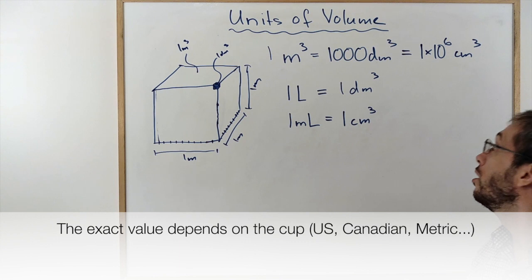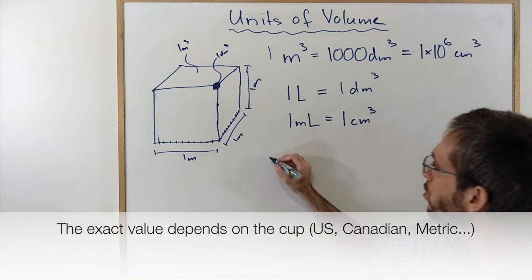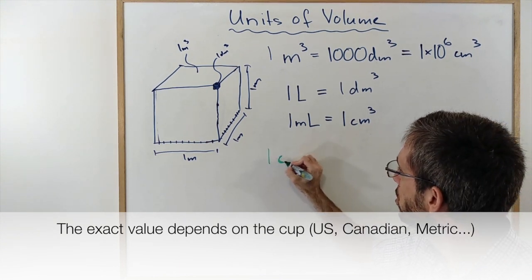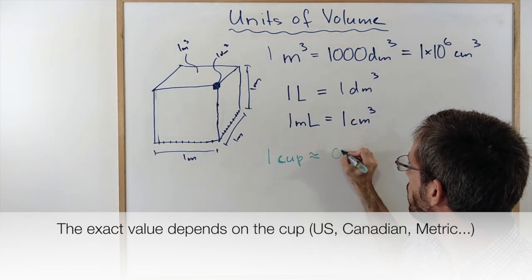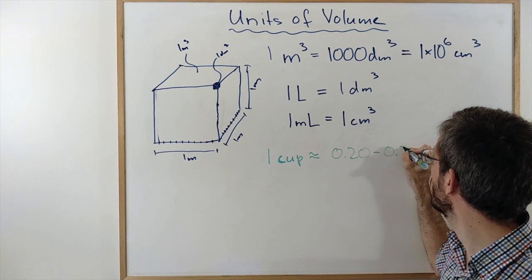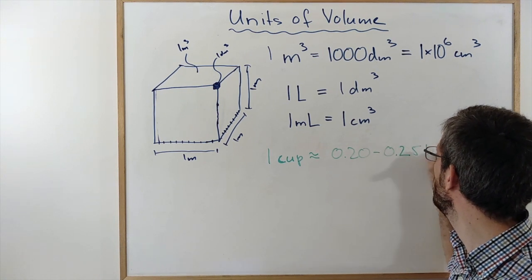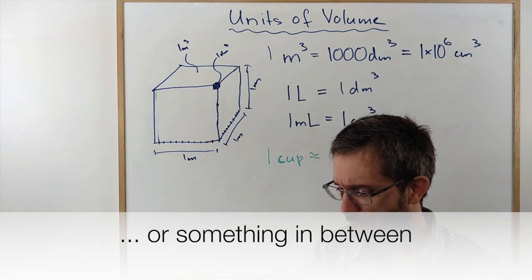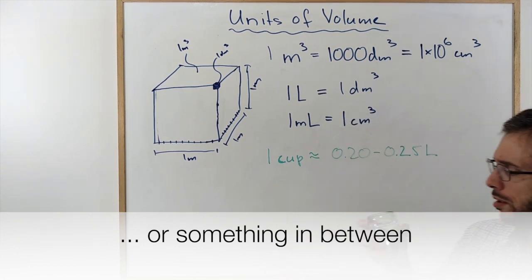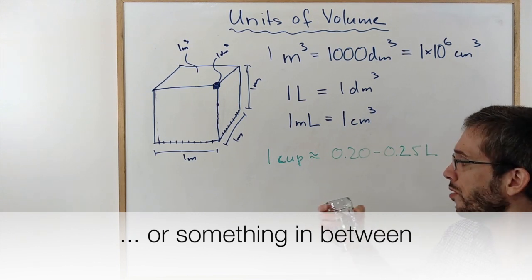Like, they could be smaller or bigger. But usually one cup is either 0.20 or 0.25 liters. So it could either be 2 deciliters or 2.5 deciliters. Sometimes you're lucky and it says on your cup how much it is and then you could use this as a perfect measuring device.